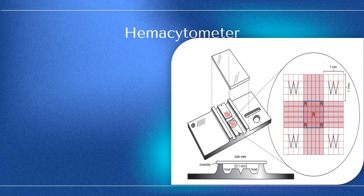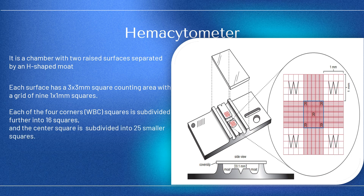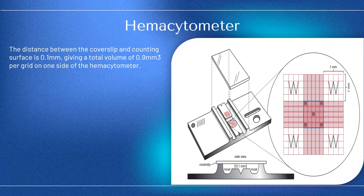A hemocytometer is a tool used in manual cell counting. It is a chamber with two raised surfaces separated by an H-shaped moat. Each surface has a 3x3 mm square counting area with a grid of 9 1x1 mm squares. Each of the four corner WBC squares is subdivided further into 16 squares, and the center square is subdivided into 25 smaller squares, each 0.2 by 0.2 mm. A coverslip sits on top, with a 0.1 mm distance to the counting surface, giving a total volume of 0.9 mm³ per grid on one side.